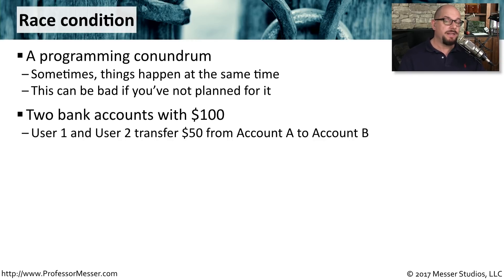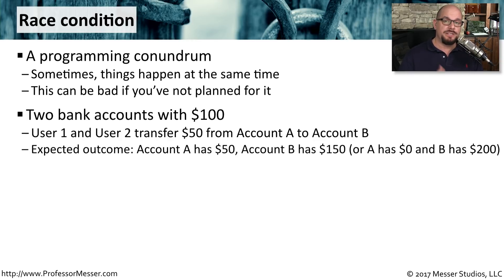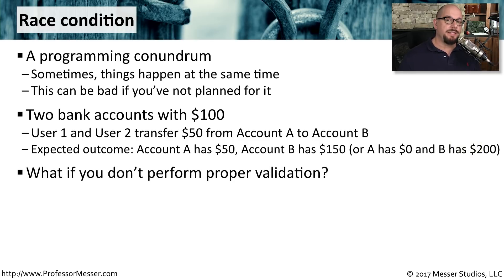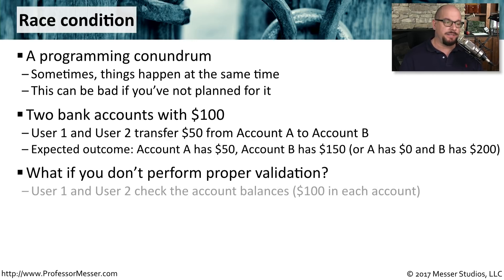If they transfer $50 simultaneously, your system will either tell you that only one of these will go through, so that account A will have $50 and account B will have $150, or it may allow both to happen simultaneously. If it's performing the right checks, you'll end up with one account having zero and the other account having all $200. But in the case of a race condition, there has to be validation in place, and if there isn't validation, you might get a race condition situation like this.